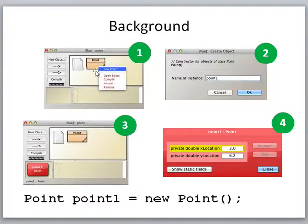As background, we've got our point. And we're going to right click on the point class and say new point. That'll pop up this create object window. We'll type in we want to call it point one. We'll say OK. And now on our object bench, we'll get something called point one down here. If we double click on that or right click and say inspect, we'll see that the values of the two fields were set appropriately.